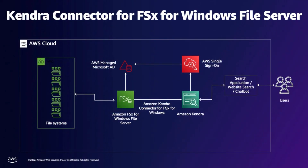Let's look at the architecture. The data is securely stored on a Windows File System on Amazon FSx for Windows File Server, which belongs to an AWS managed Microsoft Active Directory domain. This file system is configured as a data source to an Amazon Kendra index using the Amazon Kendra connector for FSx for Windows File Server. The Active Directory domain is configured to use AWS single sign-on for username group lookup, so that when a user makes a search query, Kendra filters the search results based on the user name in the user context to ensure that the response includes results from only those documents which the user is authorized to access as per the Windows ACLs.